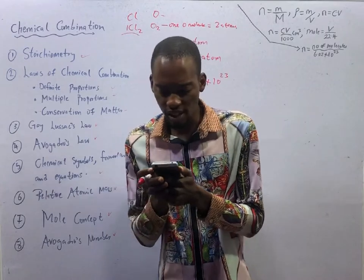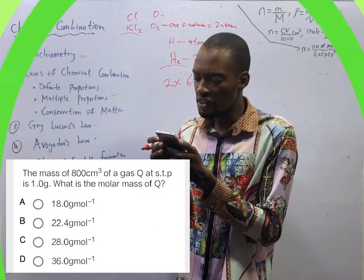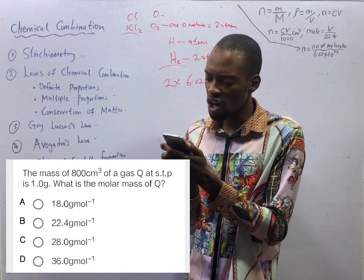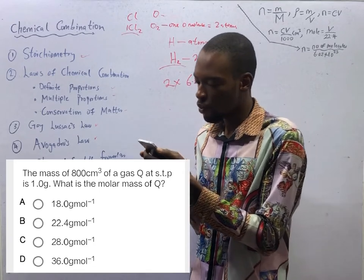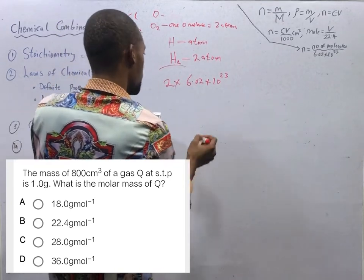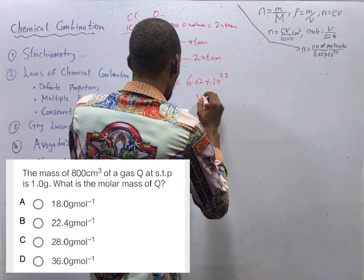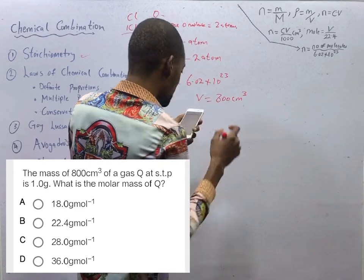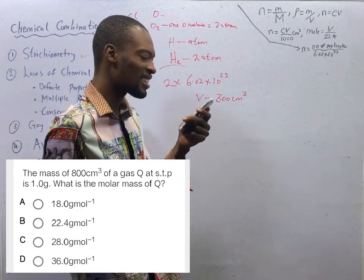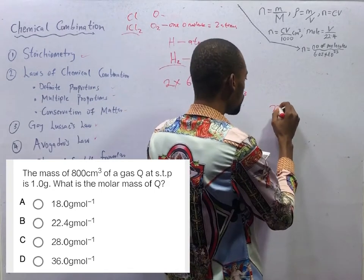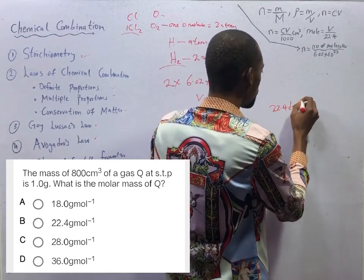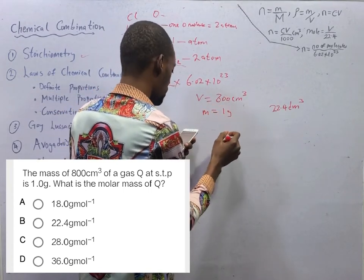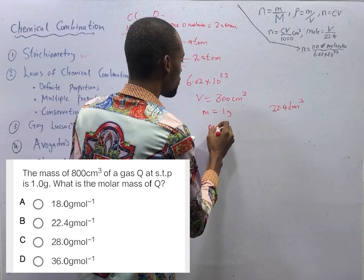And the next question says, the mass of 800 cm³ of a gas at standard temperature and pressure is 1 kg. What is the molar mass of the gas? Look at it. V equals 800 cm³. Now, the volume of any gas at standard temperature and pressure is supposed to be 22.4 dm³. The mass of this gas is equal to 1 g. So what is the molar mass? This is the question.